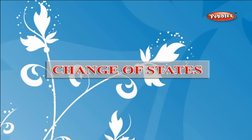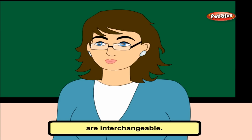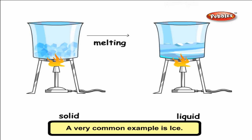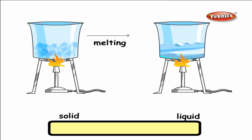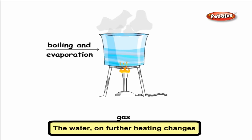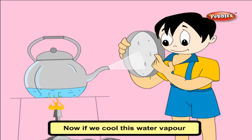Change of states. One interesting thing is that the states of some matter are interchangeable. A very common example is ice. Ice is a solid state which, on heating, melts into liquid — that is water. This process is called melting. The water on further heating changes into water vapor, which is gas. This process is called evaporation.